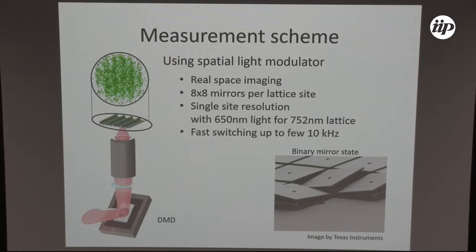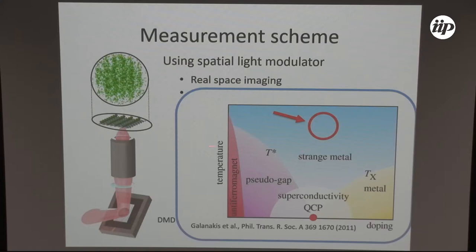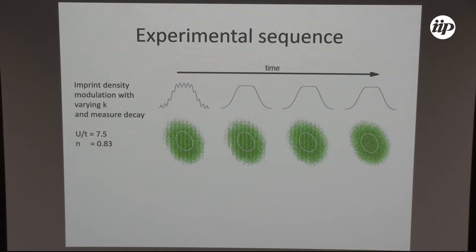We have a digital mirror device that has these mirrors. We can imprint stripes on this system and project them to the atoms. We have very high resolution, which is not necessary for this experiment. In principle we have site resolution with this device, and also fast switching. Our target area is temperature up here, so it should be in the bad metal regime. To go to this doping, we work at 80% density, 80% filling of the site.